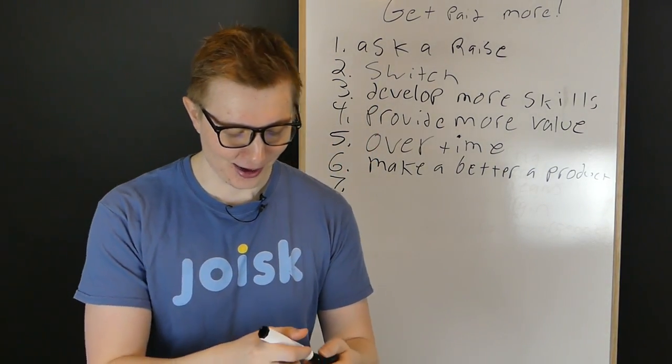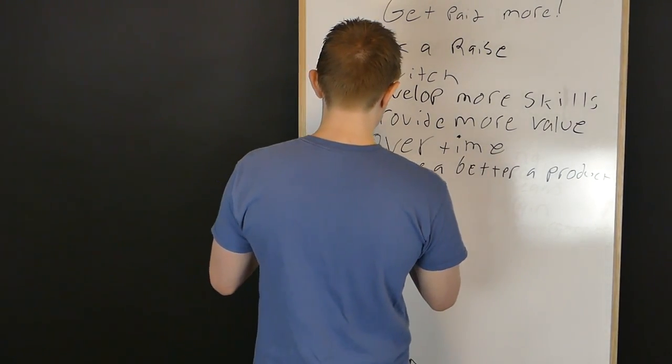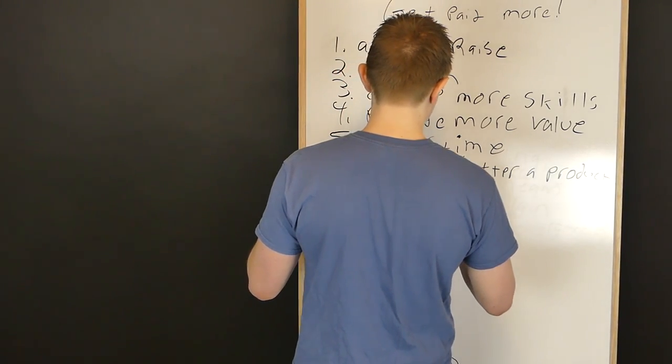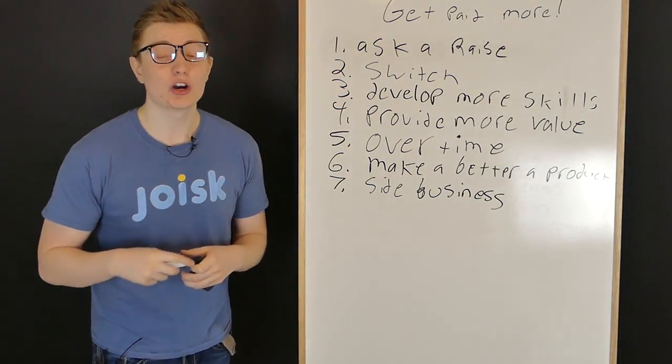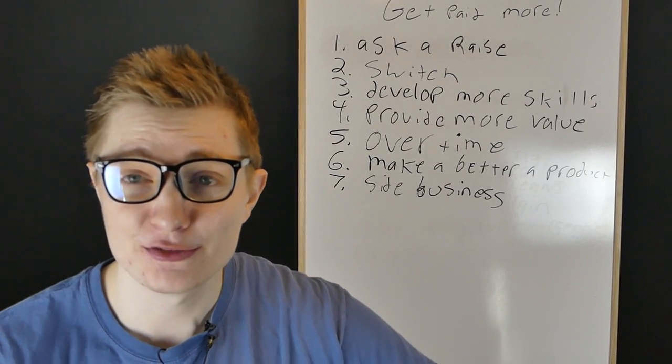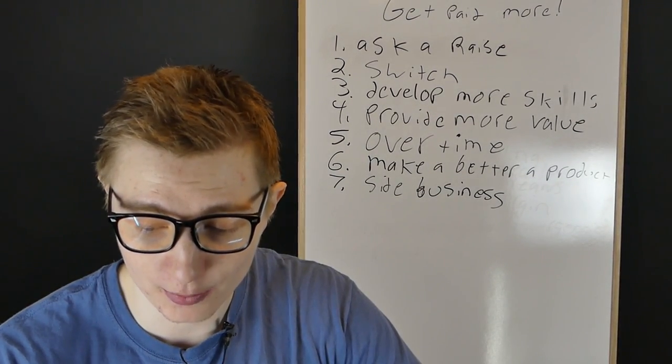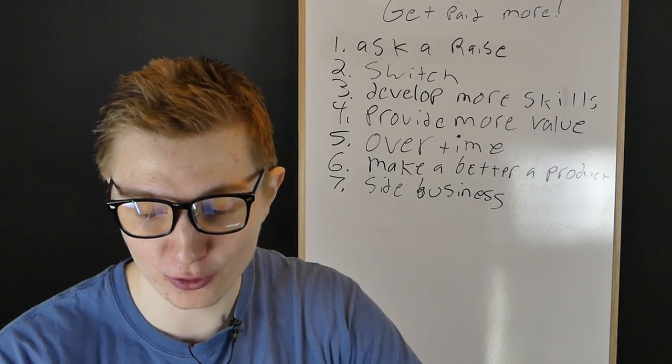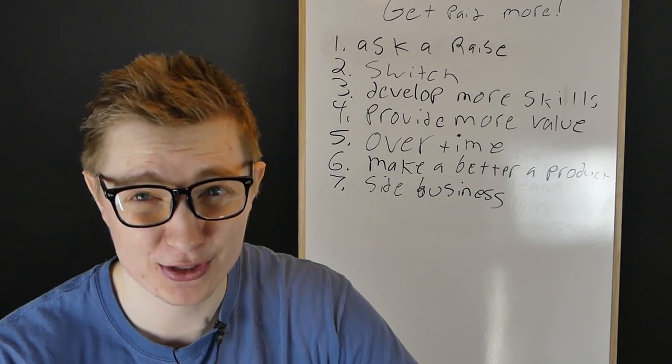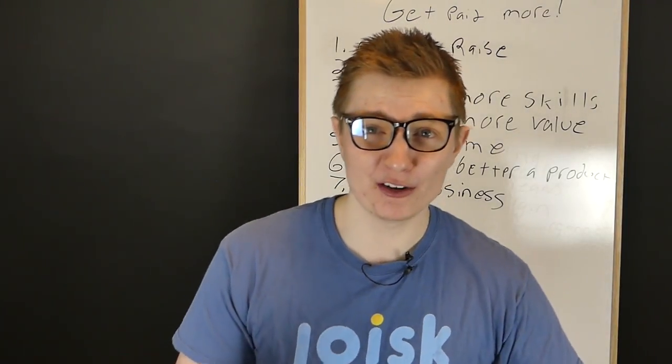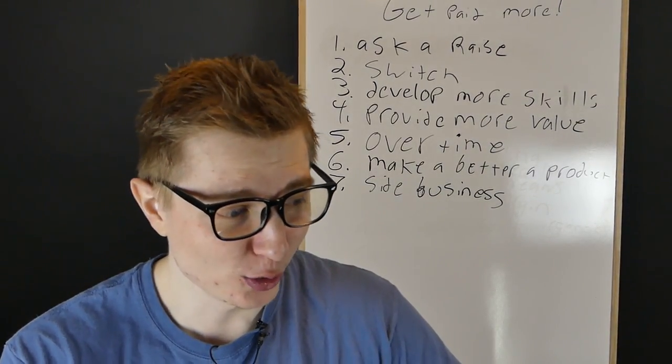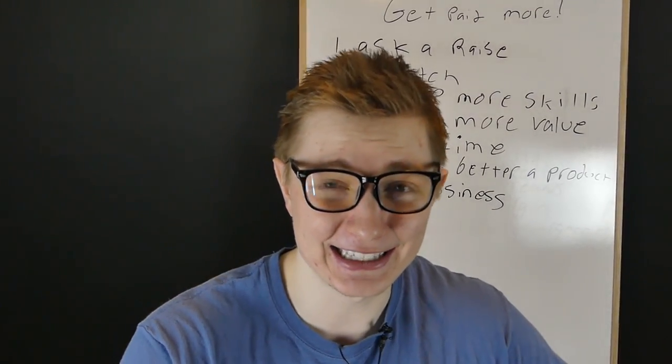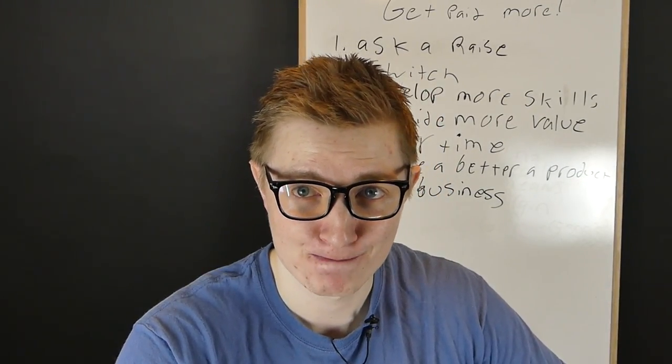Number seven is, start a side business. Sorry, I messed up the spelling there. Start a side business. 47% of millionaires are business owners, right? 47% of billionaires are business owners. So statistically speaking, think about this: 47% of millionaires are business owners, but I think it's only 7% of the population actually owns a business. So if you were to actually start a side business, you are much more likely, if it is successful, you're much more likely to become a millionaire and get paid more money.